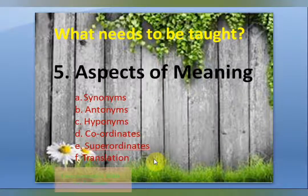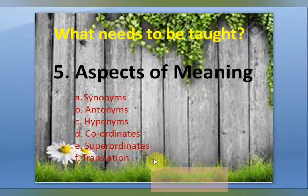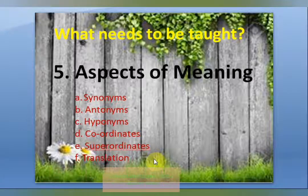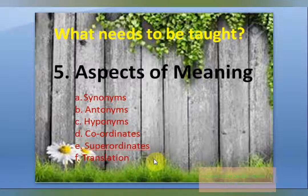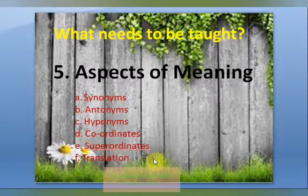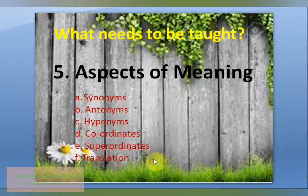Coordinates are items at the same level, like red, orange, green, purple. Superordinates are general concepts that cover specific items — for example, animal is the superordinate of dog, lion, elephant, mouse, and so forth. Translation gives a word or expression in the learner's mother tongue with more or less equivalent meaning. Meronymy covers part-whole relationships, like forehead, eyes, nose, mouth being parts of face.